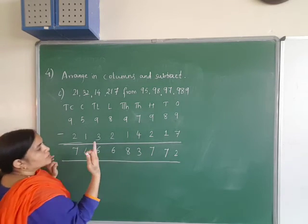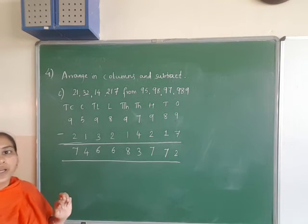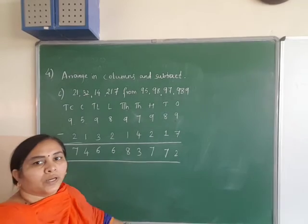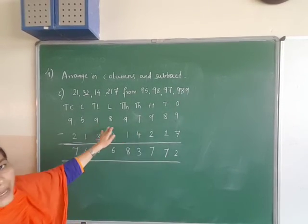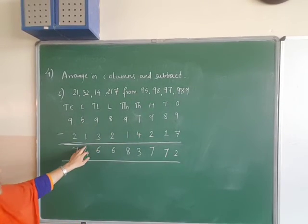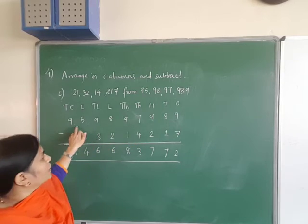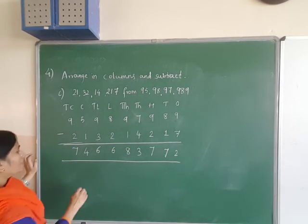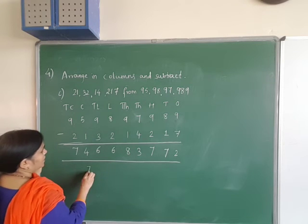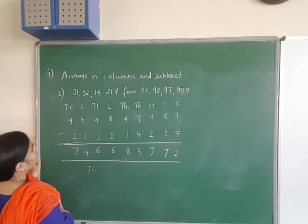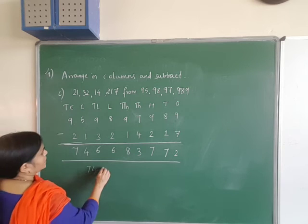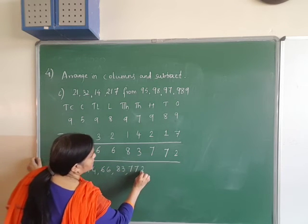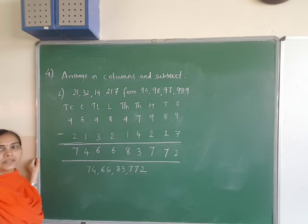Here, if there is no carry over, simple subtraction you can do. There is no carry over — this is a simple subtraction because all are bigger numbers. You can subtract easily. The answer is 74 crores 66 lakhs 83,772.